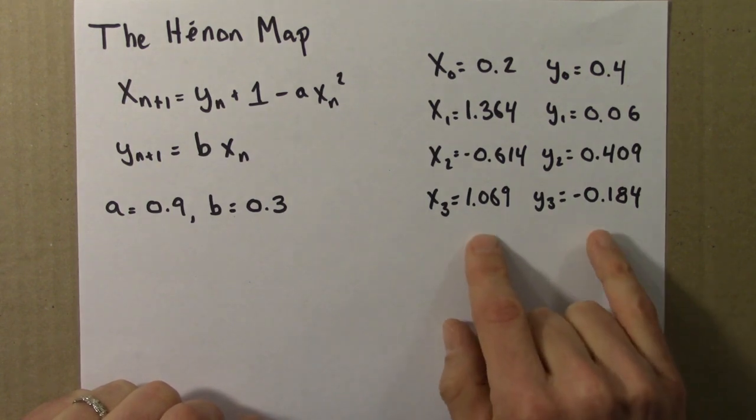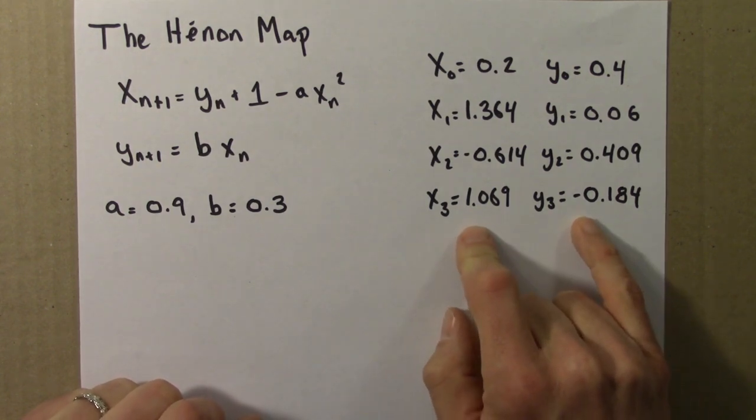Well, as usual in this course, we'd like to know what's the long-term behavior of the orbit. Are there fixed points? Are they stable? Can we have chaos? What does it look like?